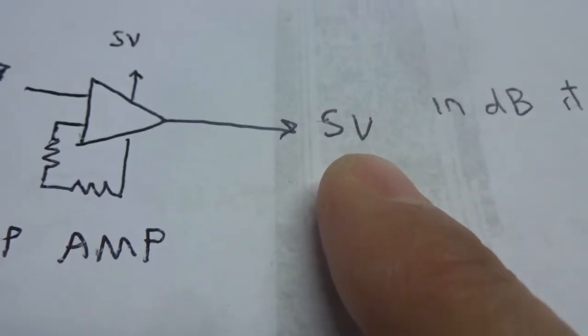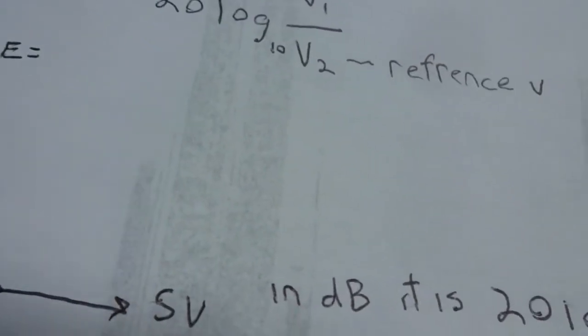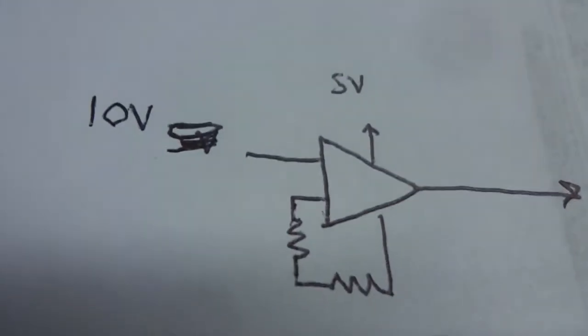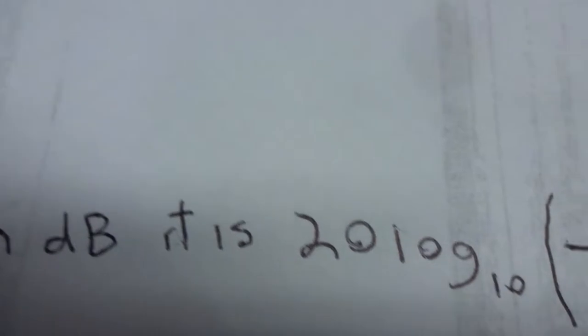What is this in decibels? In decibels, it is 20, because we're dealing with voltages here, times the base 10 logarithm of 5 volts, the output, divided by the input, 10 volts, which equals negative 6.